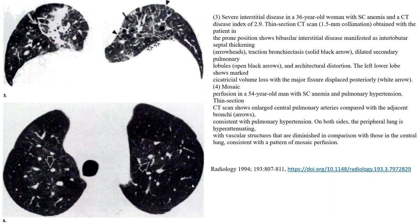Image four shows mosaic perfusion in a 54-year-old woman with sickle cell anemia and pulmonary hypertension. Thin-section CT shows an enlarged central pulmonary artery compared with the adjacent bronchus, arrow indicated, consistent with pulmonary hypertension. On both sides, the peripheral lung is hyperattenuating with vascular structures that are less prominent in comparison with those in the central lung, consistent with a pattern of mosaic perfusion.